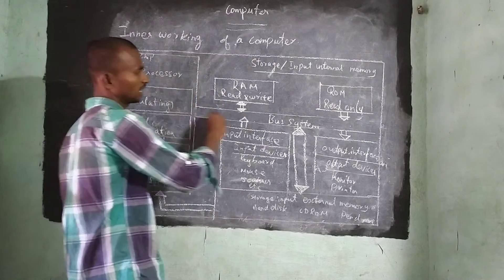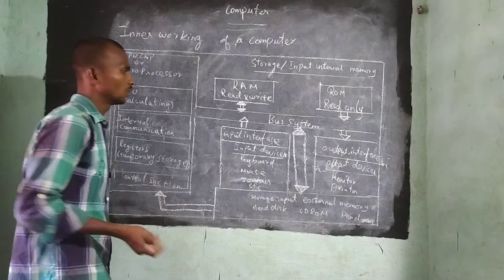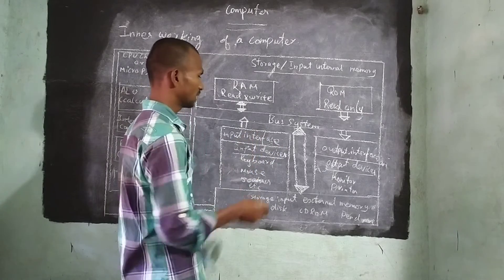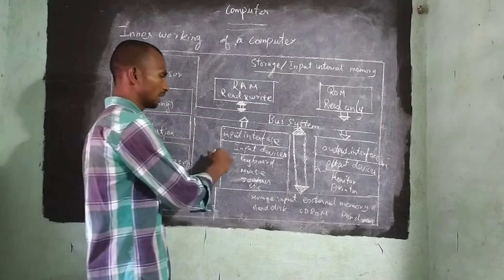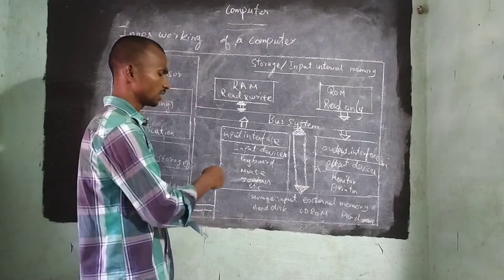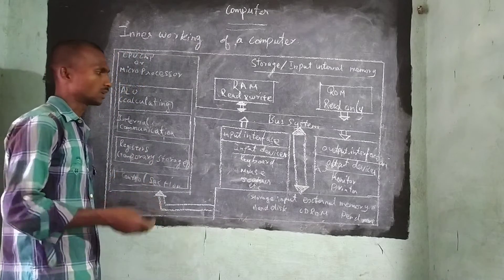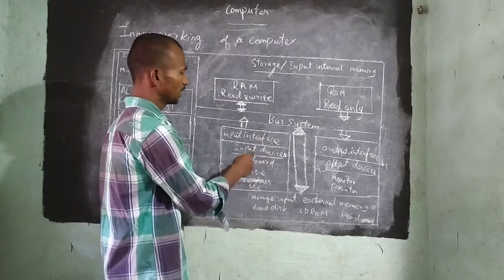So each and everything was connected through the bus system. Bus system means a cable. Input Internet. Input interface. That is input devices. What are the input devices you know? Keyboard, Mouse, Joystick, Mic, Lightment. Like there are so many input devices. That and all comes under input devices.